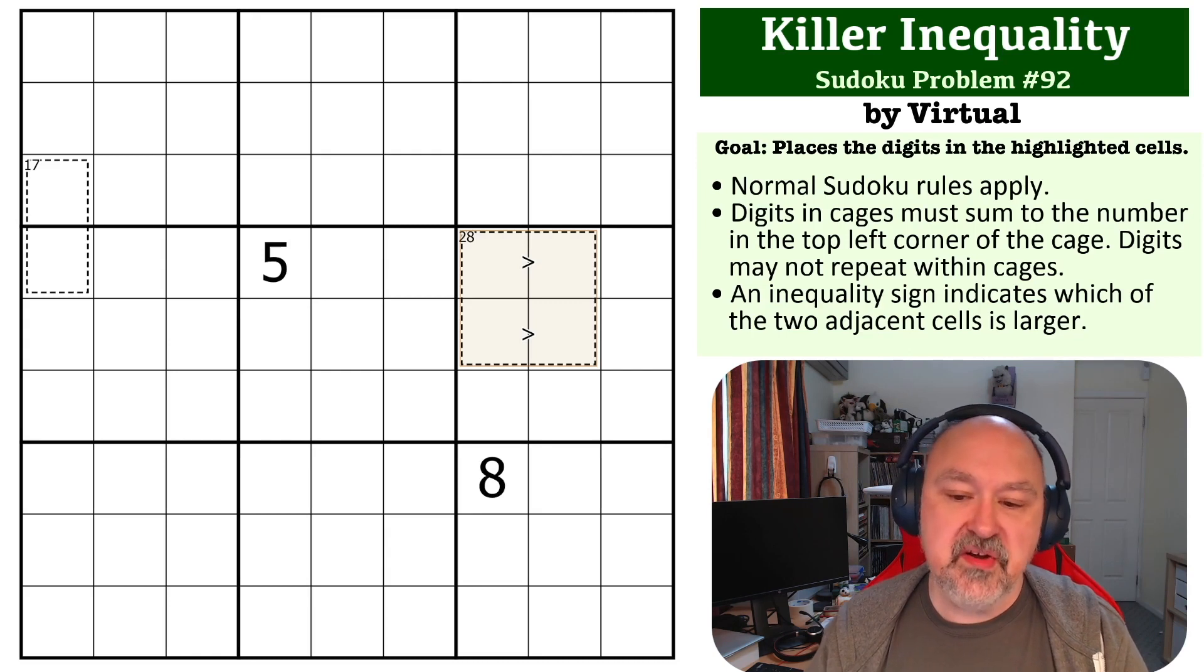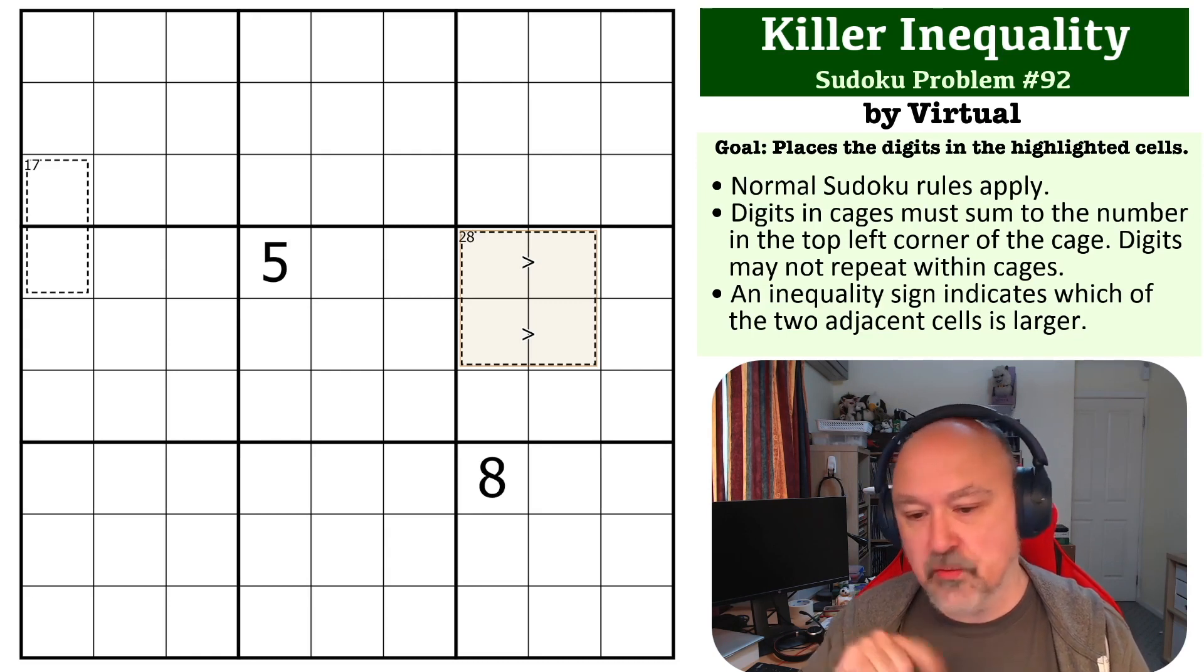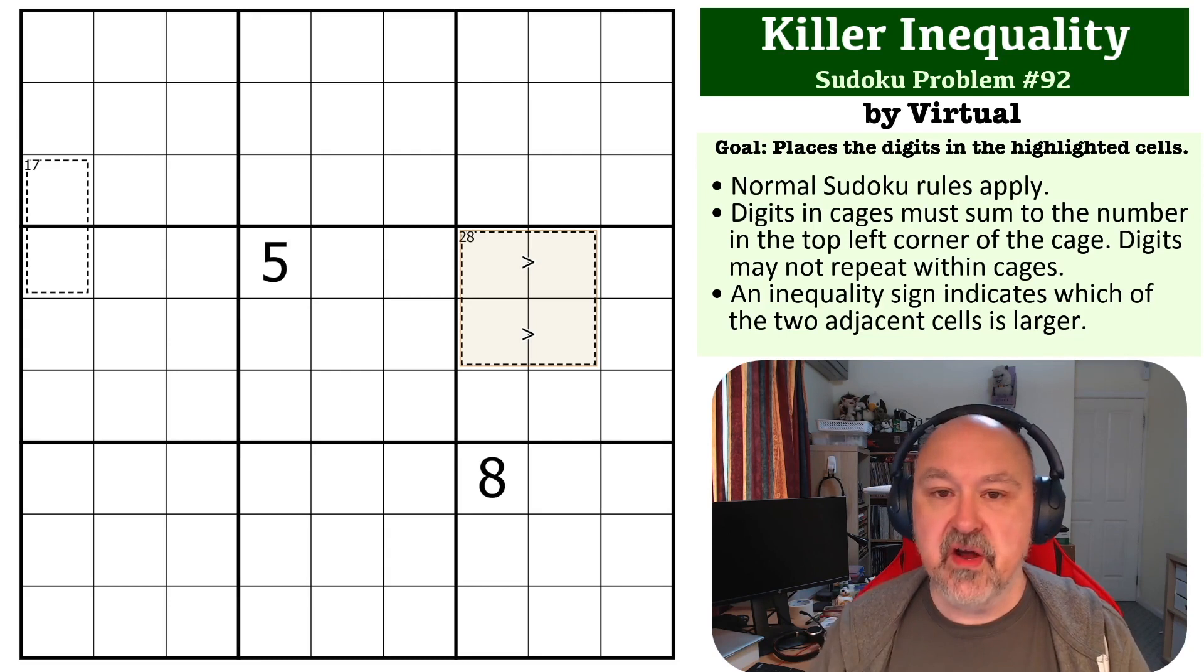There are inequality symbols, which are greater than or less than symbols, and the narrow side must point to the smaller of the two digits. That's the way that works.